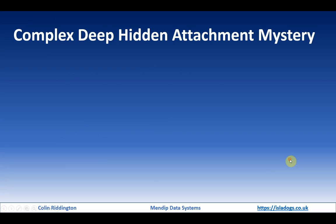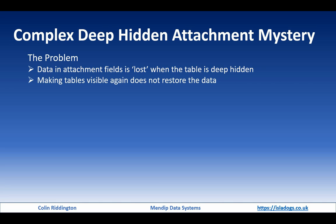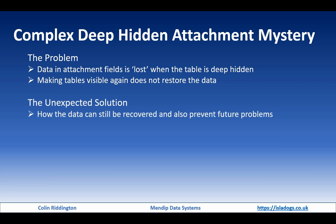Let's explain the problem that was brought to my attention. The user was trying to secure his databases — he was concerned that data was being misused and indeed stolen, so he was trying to prevent that by making his databases more secure. He found out about ways of deep hiding tables. He was also using attachment and multi-value fields, and to his dismay he found that when he deep hid those tables the data was lost, or rather appeared to be lost. Making the tables visible again didn't restore the data and he was beginning to panic. I found an unexpected solution — a way of recovering the data and also preventing future problems — which made him very pleased, though he decided to do things differently in the future.